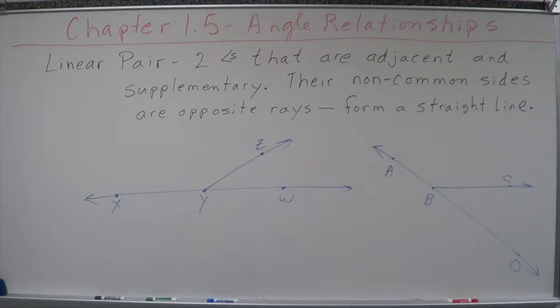Now, the non-shared sides are ray YX and ray YW. What are they? That's right, they're opposite rays. What do we know about opposite rays? Opposite rays form a straight line. What's the measure of a straight line? Definition of supplementary - two angles added together equals 180 degrees. The measure of a straight line is 180 degrees.